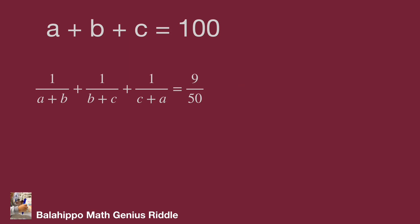It looks complicated when we see these two equations: a plus b plus c equal to 100, and 1 over (a plus b) plus 1 over (b plus c) plus 1 over (c plus a) equal to 9 over 50. I'm looking for the key point to get the value. The values 100 and 9 over 50 — if I multiply these two numbers, it becomes the integer 18.